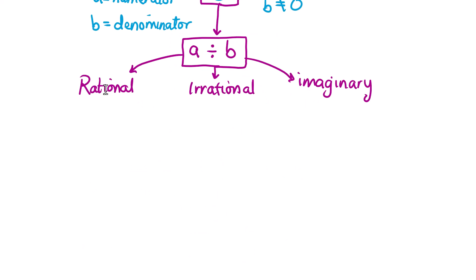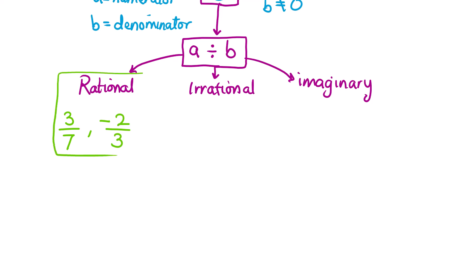For example, for rational numbers we have the following fraction formats: either three over seven, where three is your numerator divided by seven which is your denominator, both positive integers; or negative two over three, where negative two is the numerator divided by three as the denominator — or equivalently two over negative three. These examples reflect a rational number in fraction format.